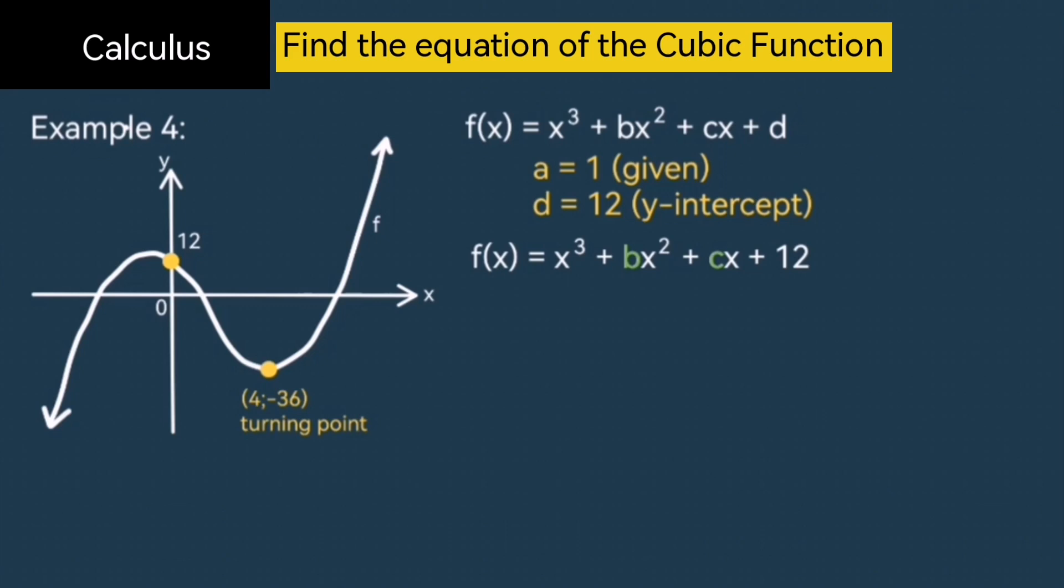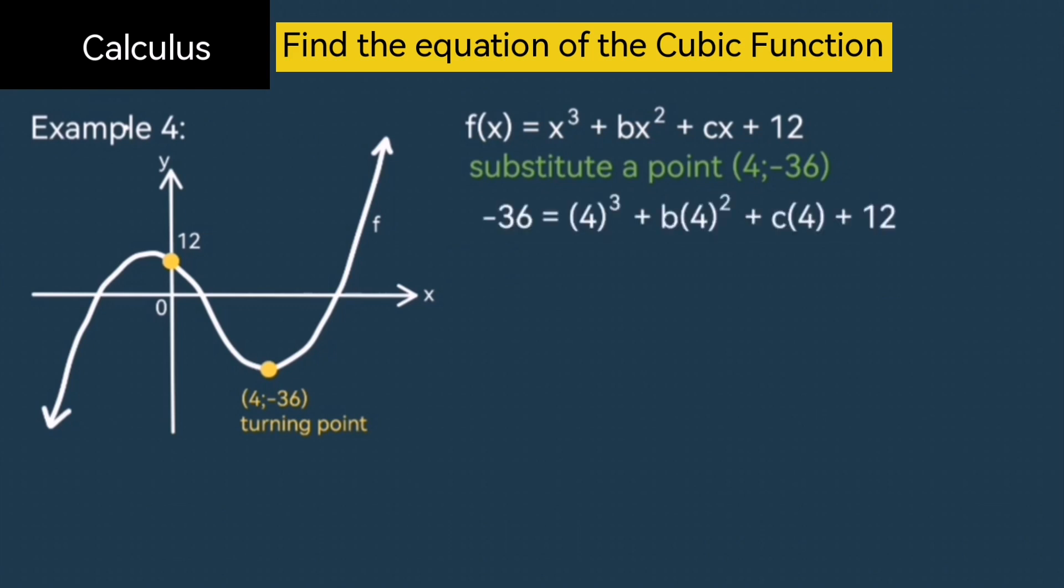Now, for any two variables that are unknown, you can only calculate it if you have two equations. I can find a first equation by substituting a point. In this case, the turning point that was given, 4 and negative 36. So we'll do direct substitution for that point. Substitute x with 4 and y with negative 36. Simplify this equation by squaring and cubing. Then adding your constants. 64 plus 12 plus 36 is 112. Divide the entire equation by a factor of 4 and then make c the subject of the formula. So we end up with c equal to negative 4b minus 28. Now that's the first equation.